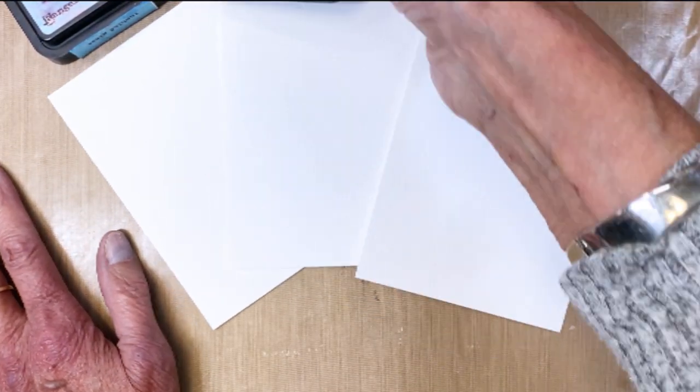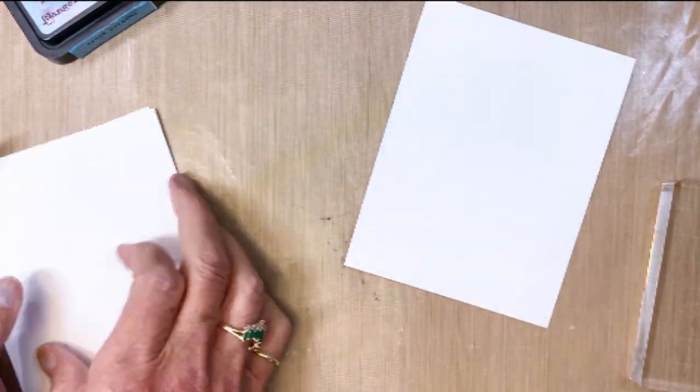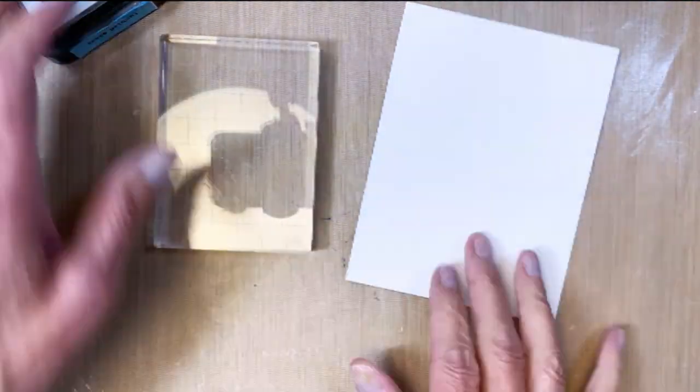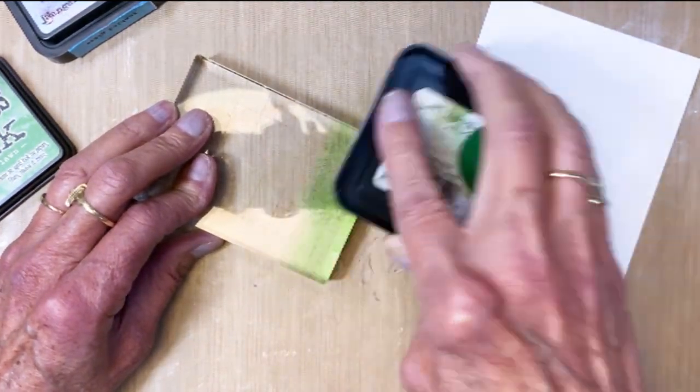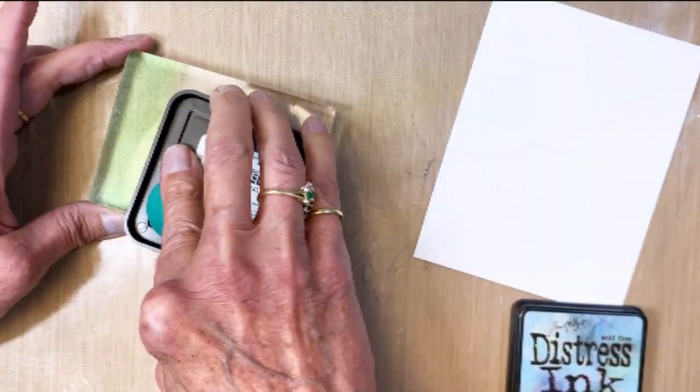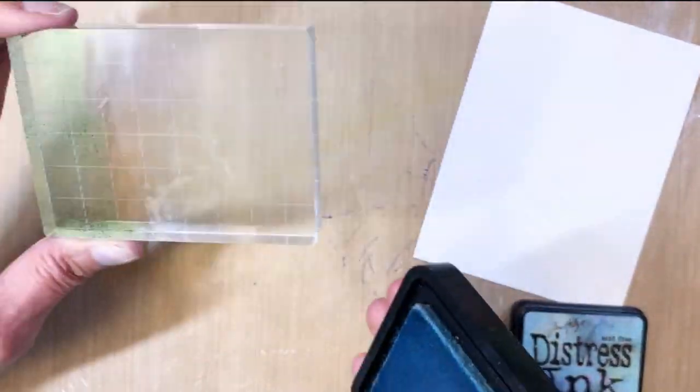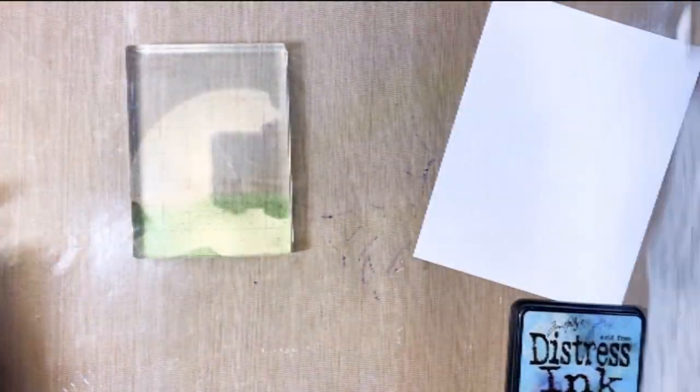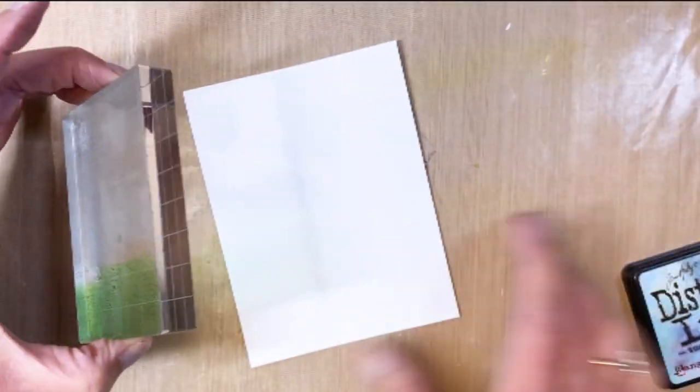So here I've got three pieces of watercolor cardstock. So again that's what I'm going to do the backgrounds with. So I pulled out this acrylic block and I'm adding mowed lawn at the bottom and tumbled glass up here at the top. I just kind of wanted some color in the back of the front of the card.